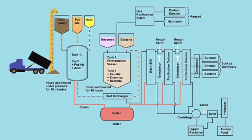Enzymes and bacteria are added and fermentation begins. The enzymes break down the complex sugars released from the draf, and the bacteria convert these to solvents: acetone, butanol, and ethanol. Fermentation also produces gases, hydrogen and carbon dioxide. These are recovered and purified. Fermentation takes around 48 hours.